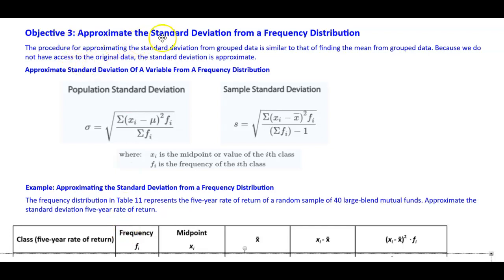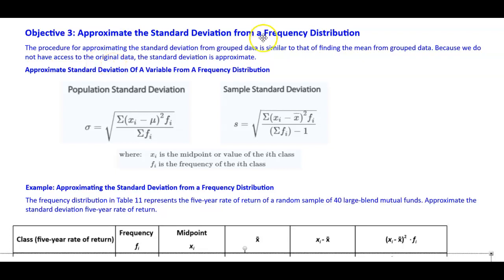Objective 3: Approximate the standard deviation from a frequency distribution. The procedure for approximating the standard deviation from grouped data is similar to that of finding the mean from group data. Because we do not have access to the original data, the standard deviation is approximate.